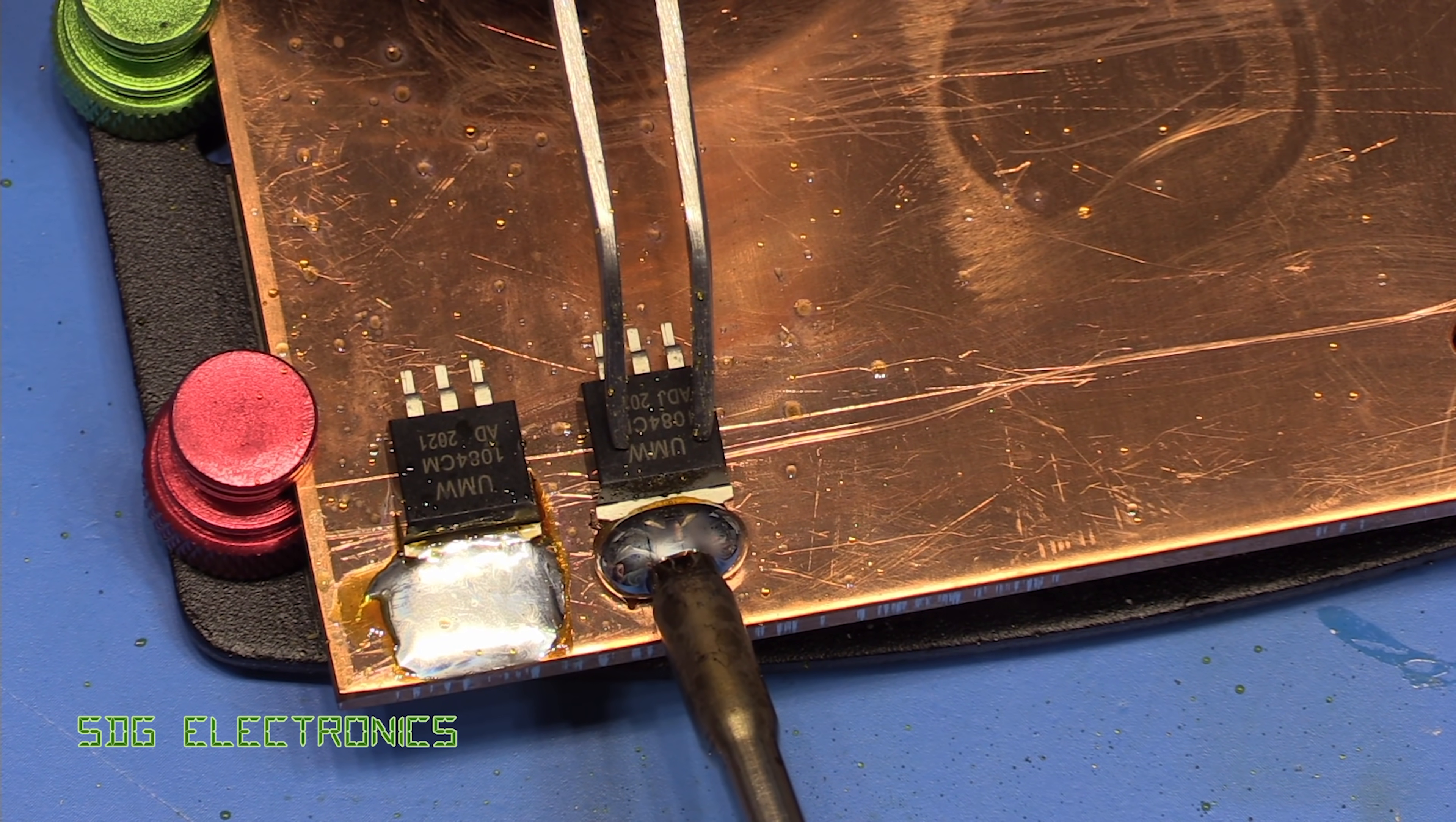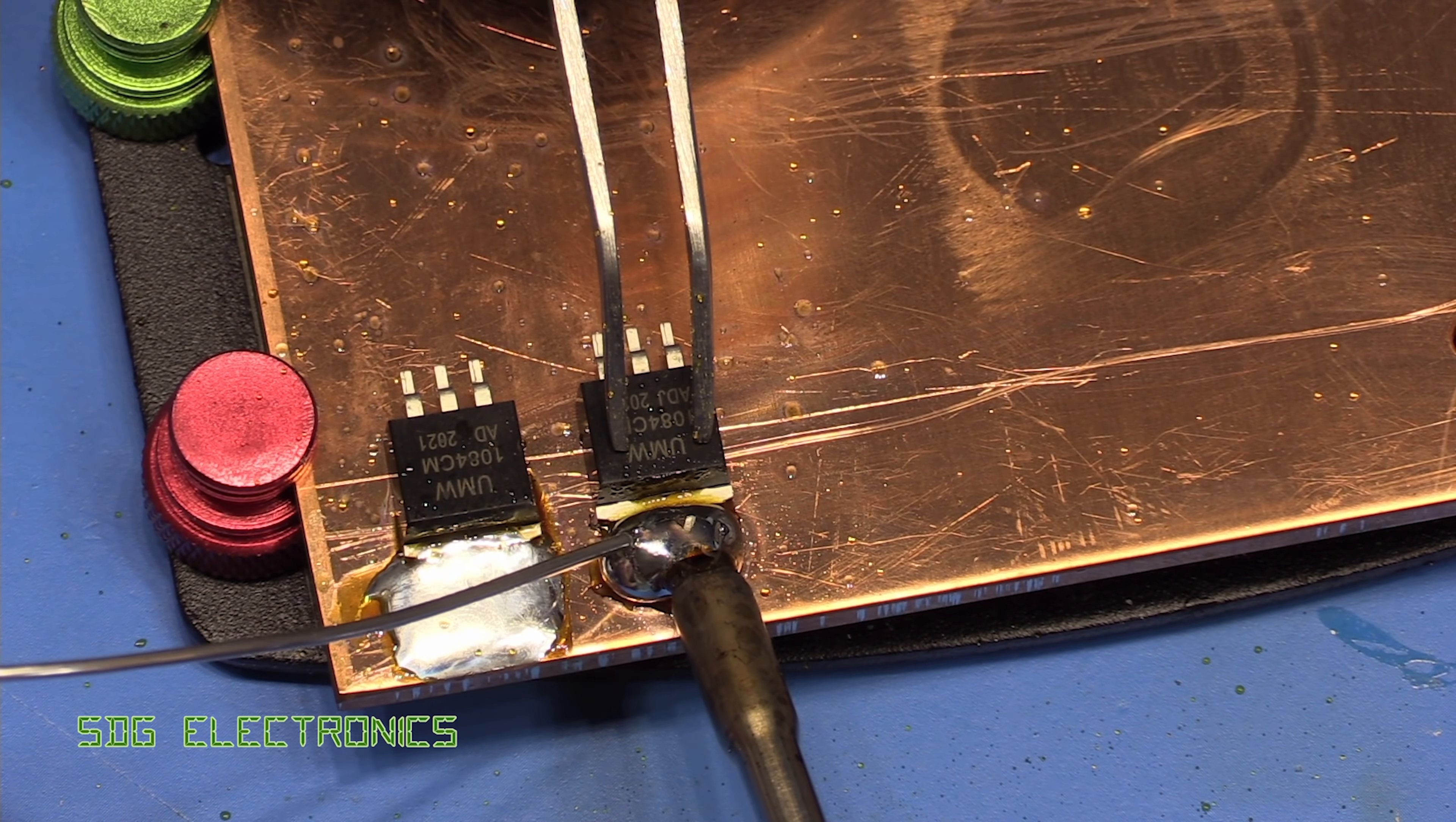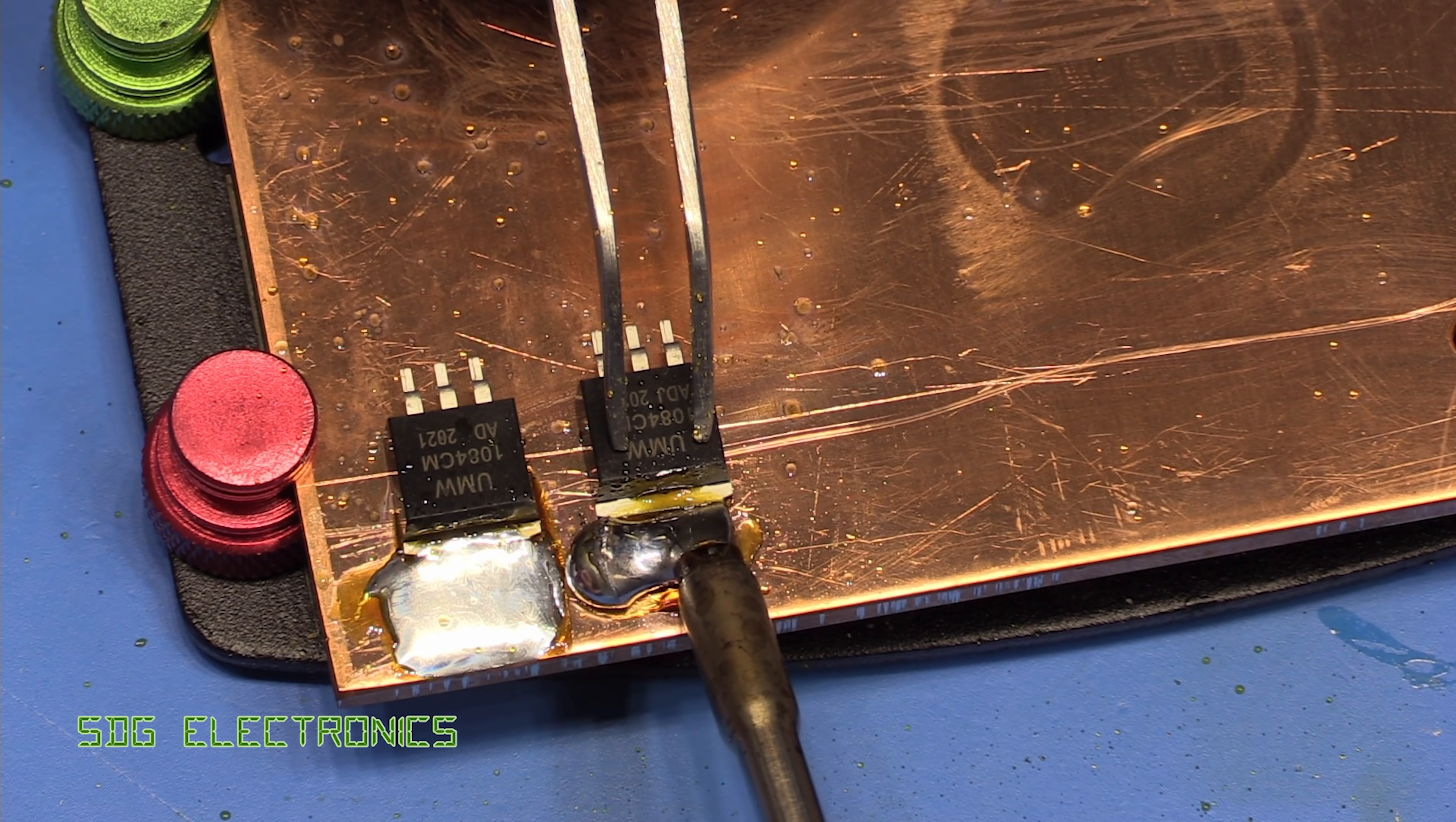The readout on the front of the ADS200 has dropped to 370 degrees C at the moment. And let's see what happens. You can see the solder's actually gone solid on one side there.